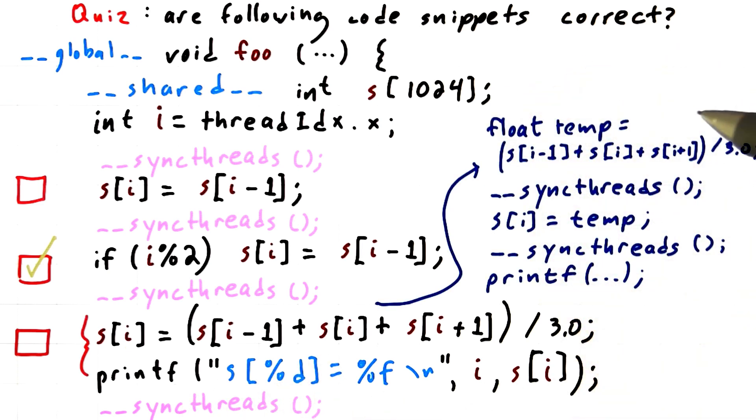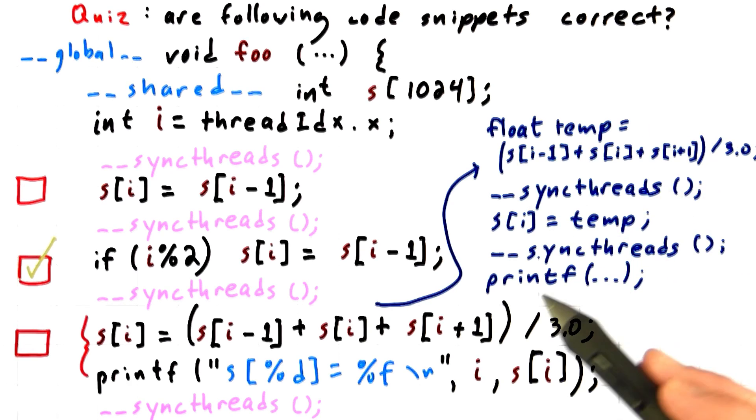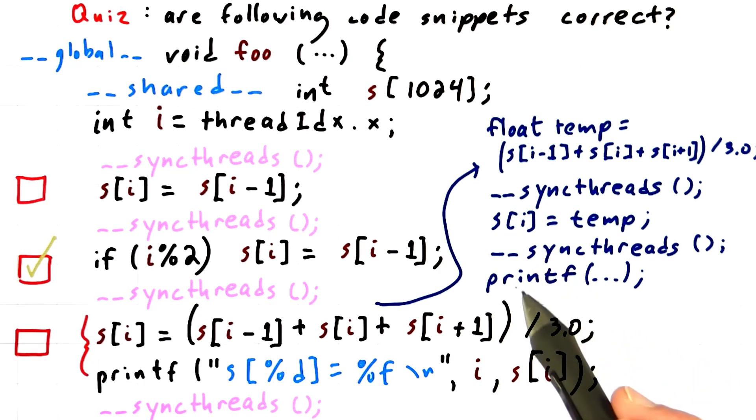So to make this code correct, we'd have to do something like this. We'd have to use a temporary variable, do all of the reads, sync, do the write, sync, and then do the printf. The writes have to complete before this printf is done to make sure that the printf prints the correct value.